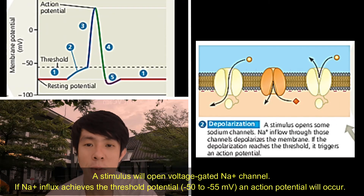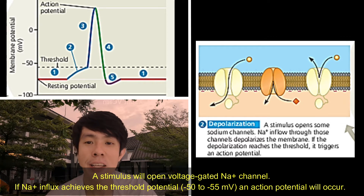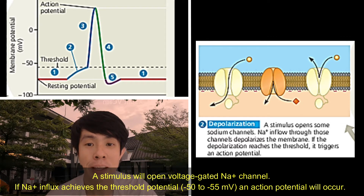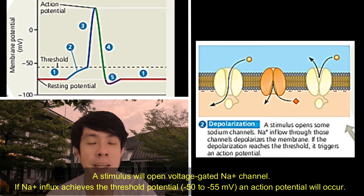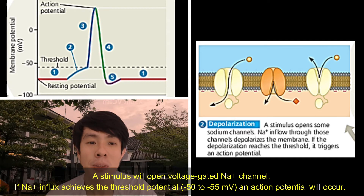A stimulus will open the voltage-gated sodium ion channel. If sodium ion influx achieves the threshold potential, about negative 50 to negative 55 millivolts, an action potential will occur.